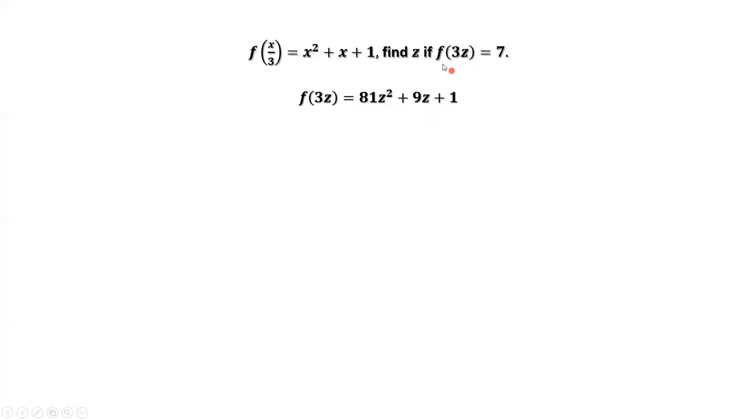We have f of 3z equals 7. We have f of 3z equals 7 from this given condition. This means the right-hand side equals 7.